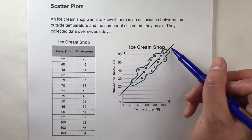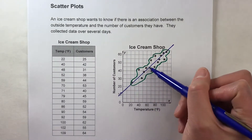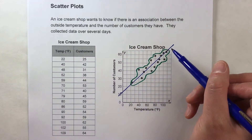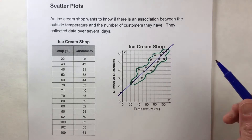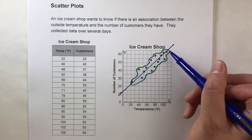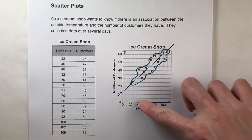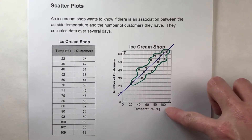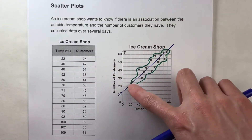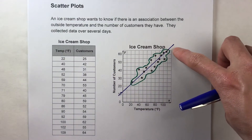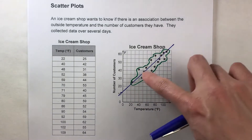Once we've done that, we can look at this line and say this line is going up and to the right, so it has a positive slope — meaning there's a positive association. What that means is as the temperature increases, the number of customers also increases.